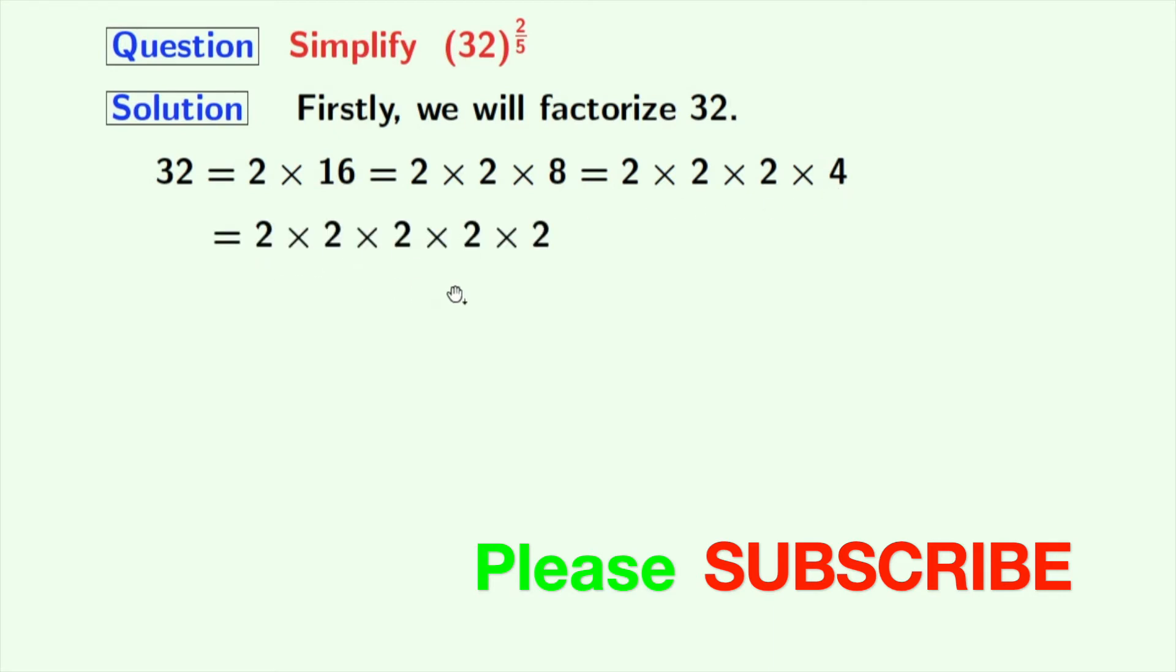Finally, we have five 2s here, so this can be written as 2 to the power of 5. And we have 32 equals 2 to the power of 5.